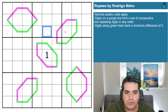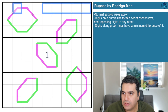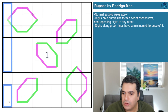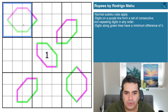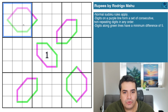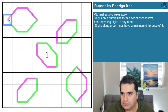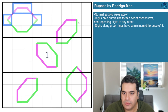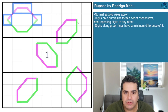Normal Sudoku rules apply — digits one to nine in every row, every column, and every three by three box. Digits on a purple line, which is essentially half of every rupee we see on here, form a set of consecutive non-repeating digits in any order. Essentially Rembrandt lines, which we're familiar with on the channel.